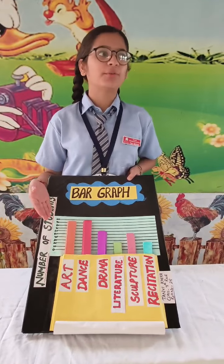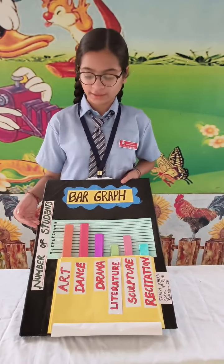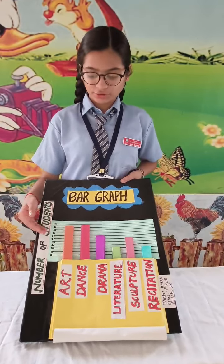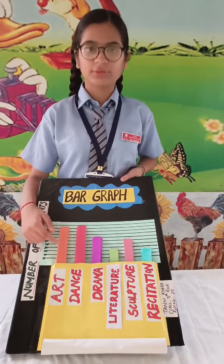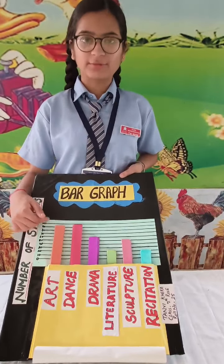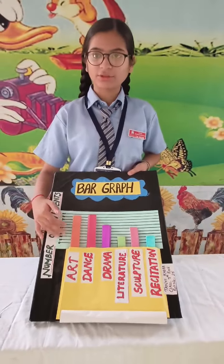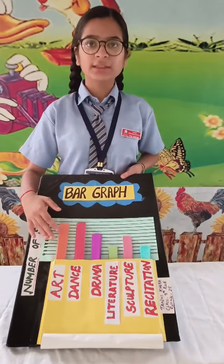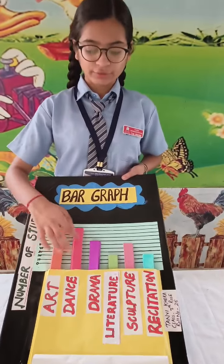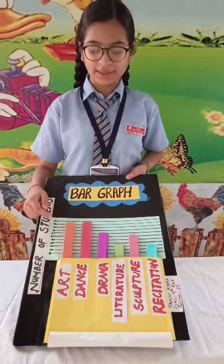A bar graph is another form of graphical representation of data. It shows the quantity according to the length of bars. These can be either horizontal or vertical. These bars are of equal width with equal spacing between them.